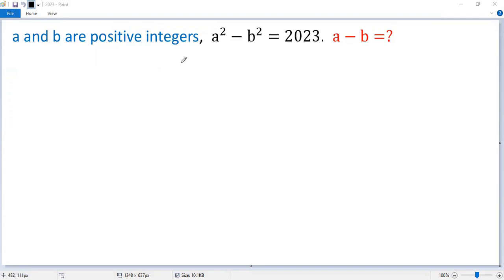If a and b are positive integers, a squared minus b squared equals 2023. To find the value of a minus b, let's figure out the prime factorization of 2023.